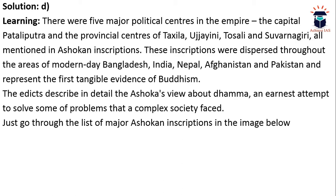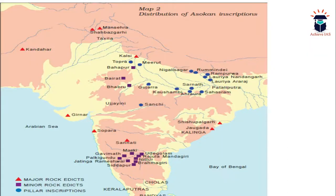There were five major political centers in the empire: the capital Patliputra and provincial centers of Takshila, Ujjain, Tossali, and Suvarnagiri — all mentioned in Ashokan inscriptions. These inscriptions were dispersed throughout modern-day Bangladesh, India, Nepal, Afghanistan, and Pakistan, and represent the first tangible evidence of Buddhism. The inscriptions describe in detail Ashoka's view of Dhamma and his earnest attempt to solve problems that society was facing at that time.